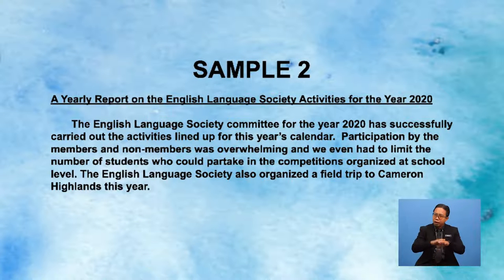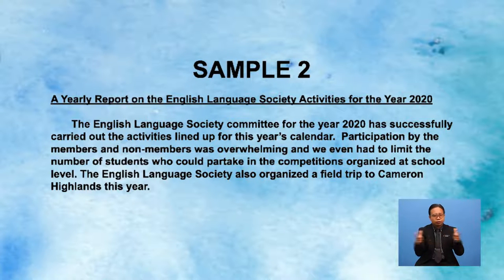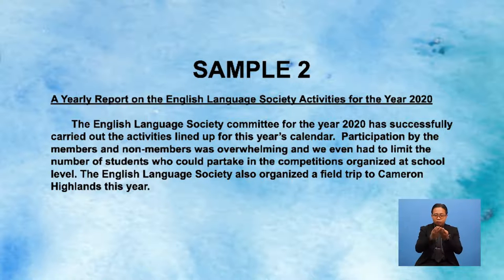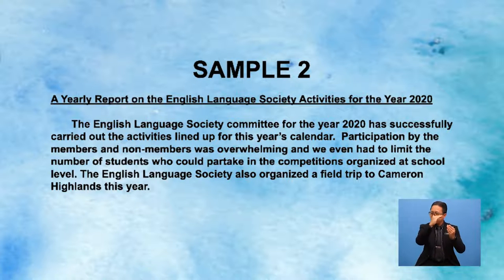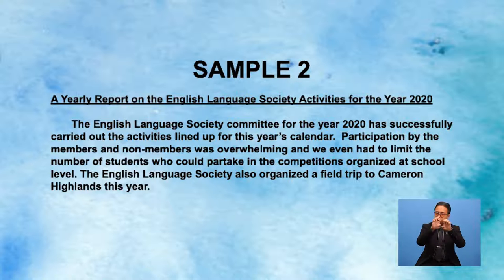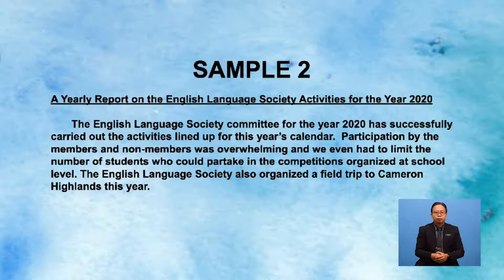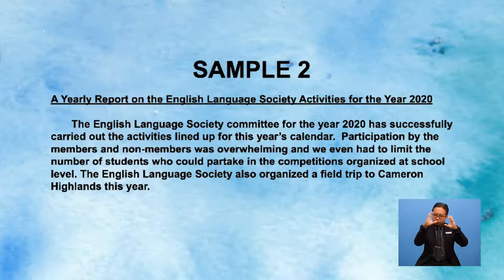Look at Sample 2. This sample is written for the school magazine. It is also a report, but the purpose is different. This report tells you about the activities carried out by the society for the year 2020. The purpose of the report will determine the layout of your report. The layout usually accounts for the format marks in the exam too. This report is not addressed to anyone in particular, so we do not have anyone's name at the beginning. It starts with the title and the first paragraph introduces the list of activities carried out by the English Language Society.